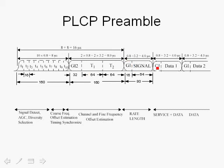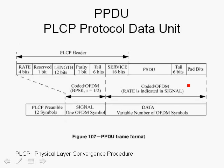The preamble is immediately followed by the signal field, and the signal field is followed by OFDM symbols carrying the data. Both the signal field and the OFDM data symbols contain pilots, which are used for tracking purposes after initial acquisition. The length field is 12 bits, giving 2^12 or 4096 combinations, but the MAC actually sends a minimum of 1 byte and a maximum of 4095 bytes.